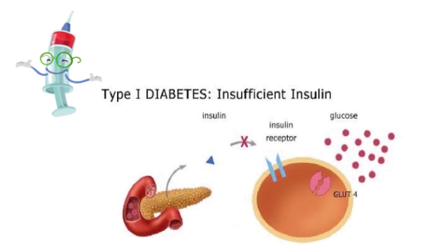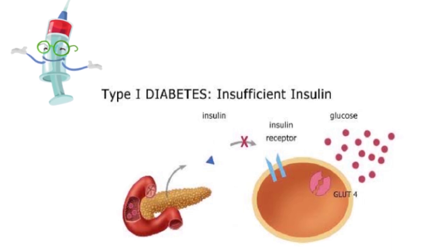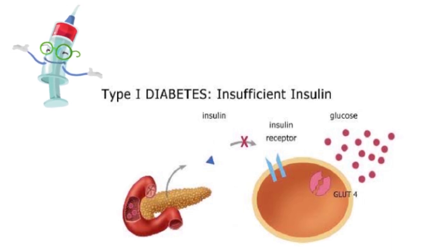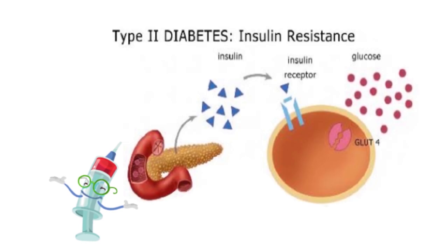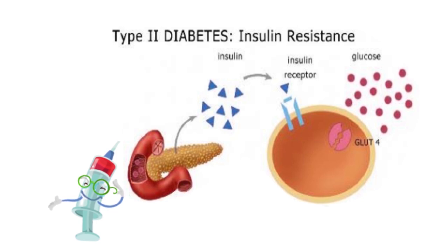People with type 1 diabetes cannot make insulin because beta cells in the pancreas are damaged or destroyed. Therefore, these people will need insulin injection to allow their body to process glucose and to avoid complications from hyperglycemia. People with type 2 diabetes do not respond well or are resistant to insulin. A person with type 2 diabetes may first be treated with oral medications along with diet and exercise. Since type 2 diabetes is a progressive condition, the longer someone has it, the more likely they will require insulin to maintain well-controlled sugar levels.